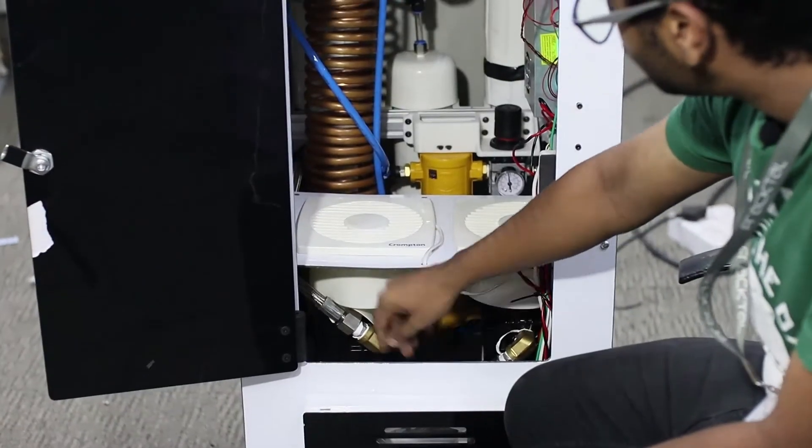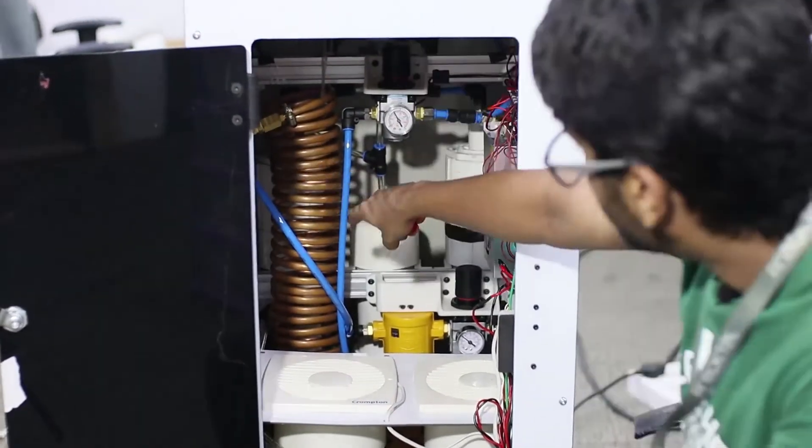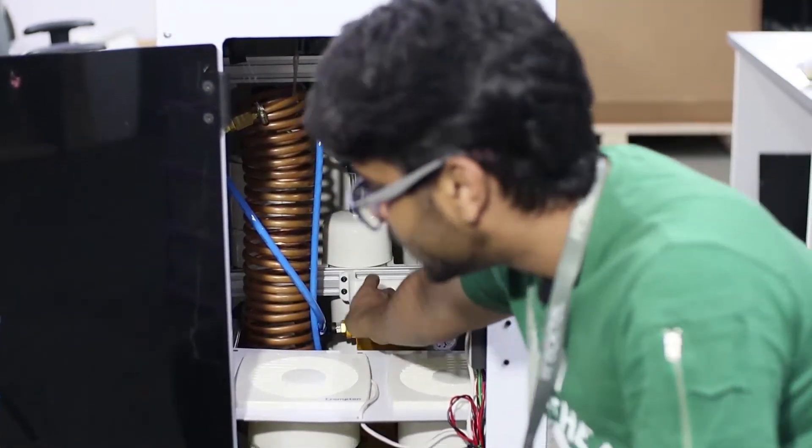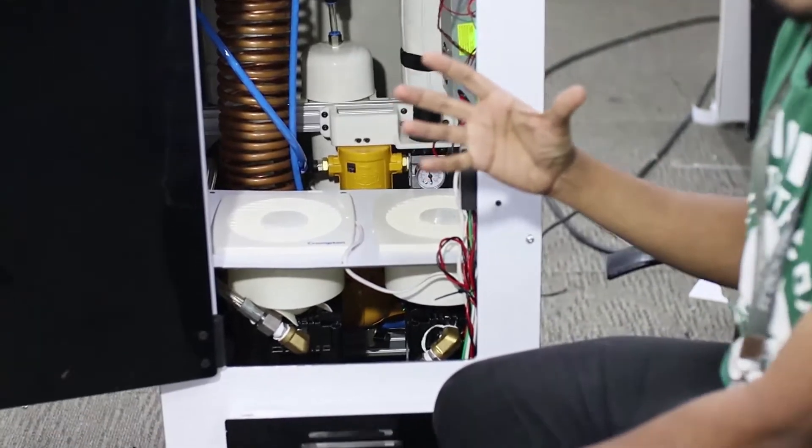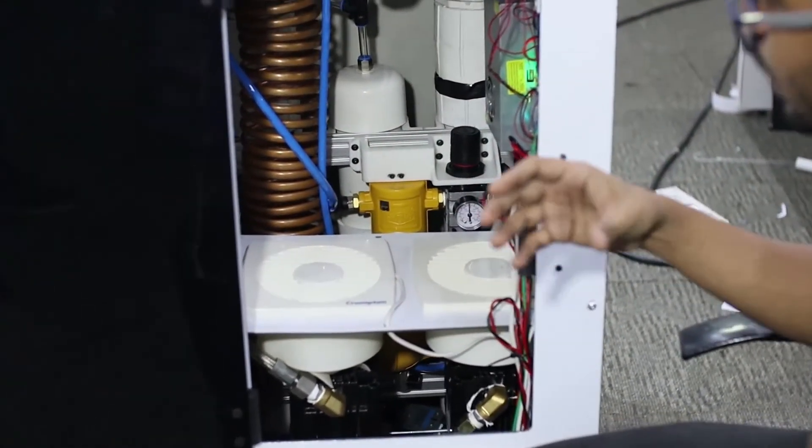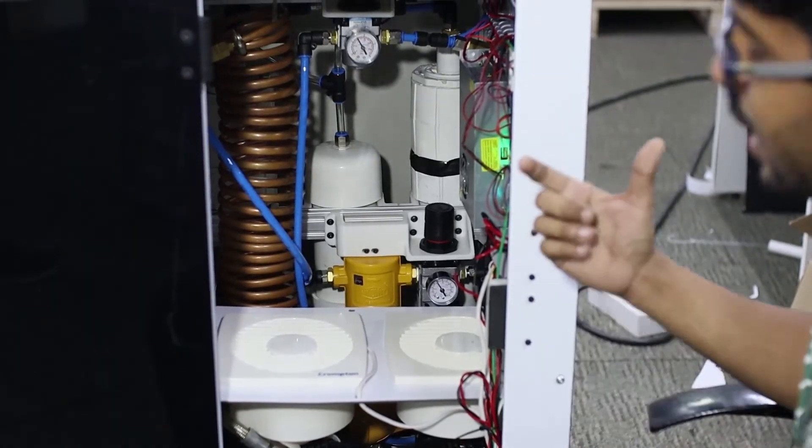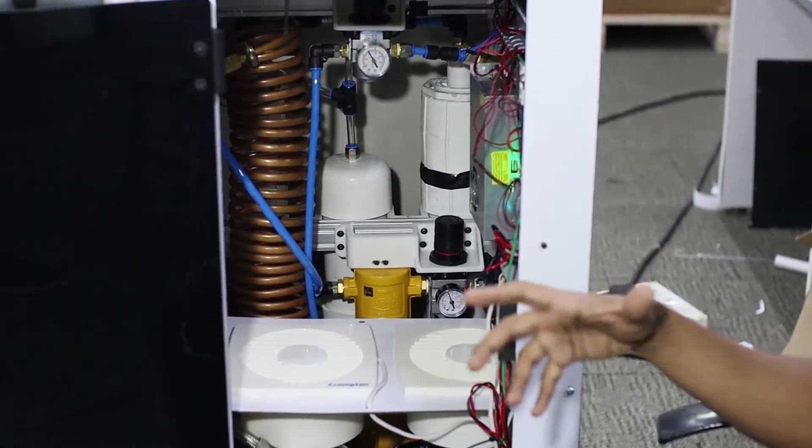The air from the compressor is cooled with the copper cooling coils over here. The cooling coils then go to a moisture separator. Now the moisture separator is a critical component because it removes all the water from the air. This is one of the critical components that are missing in most commercial oxygen concentrators, and that's the reason why most of them fail after a few weeks.